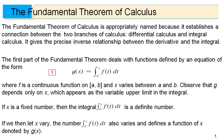Now if x were a fixed number like 3 or 7 or one half, then this definite integral would give us a definite number. Because we let x vary, we are going to get different amounts of area under this f of t function, and therefore the g function is going to get different answers depending on x and it becomes a function. You pick a different x, it computes an area and spits out a number — that's g of x.